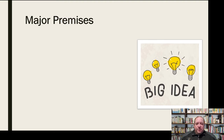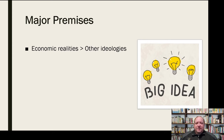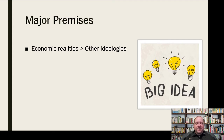Let's look at the major premises, the big ideas behind Marxist analysis. First of all, economic realities are greater than other ideologies according to Marxist thinking. Those economic realities are what define us — our materialistic items define us, not our ideas. That's a core of the Marxist system: economic realities really outweigh everything else. Everything comes down to money, sustainability, and economics.